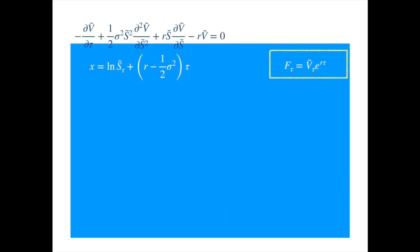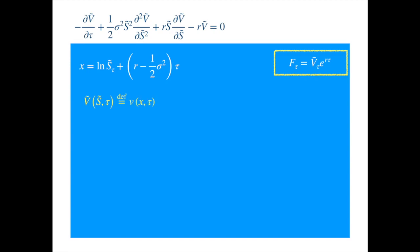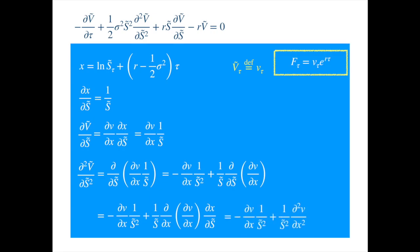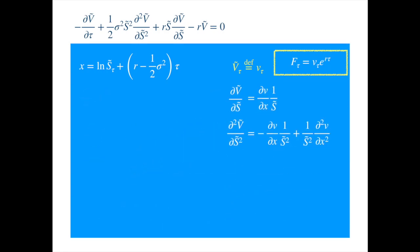Let's tackle the second transformation. We relabel the functions slash dependent variables whenever we transform the variables. Now, the derivative with respect to both s and tau will change. First, we change the derivative of v with respect to s to a derivative with respect to x. And we use the chain rule. So we get... And for the second derivative, we differentiate the first derivative again. And then apply the product rule. And then apply the chain rule to the second term. And finally, substitute 1 over s for the derivative of x with respect to s. And we have the derivative with respect to s. And we can simplify the second derivative by factoring 1 over s squared.